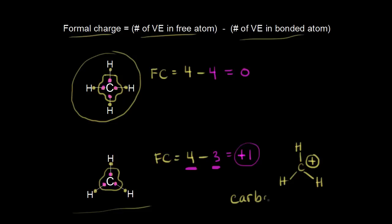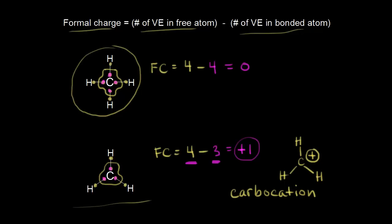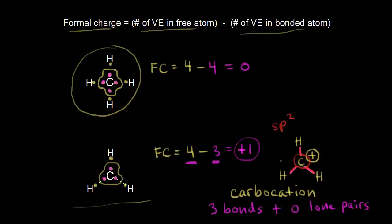Carbocations come up a lot in organic chemistry mechanisms, so it's really important to understand them. The pattern we see here: three single bonds and zero lone pairs of electrons around carbon gives you a positively charged carbon — a carbocation. The hybridization of this positively charged carbon: it has three sigma bonds and zero lone pairs of electrons, so this carbon is sp2 hybridized, and therefore has trigonal planar geometry around it.